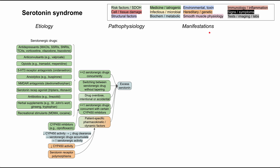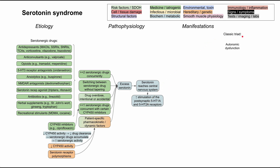Now let's work toward the manifestations — how does excess serotonin lead to the manifestations of serotonin syndrome? Serotonin at high levels reaches the central nervous system and stimulates postsynaptic receptors 5-HT1A and 5-HT2A. This is where you get the classic triad: autonomic dysfunction, neuromuscular excitability which results in hyperthermia, and altered mental status.